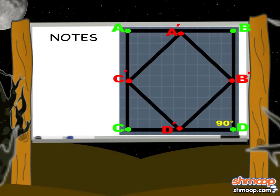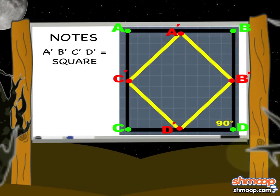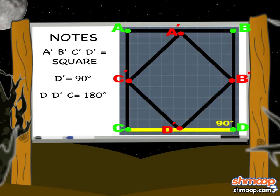Since A'B'C'D' is also a square, we know that angle D' is also 90 degrees. Angle D'D' is a straight angle, so it has a measure of 180 degrees.